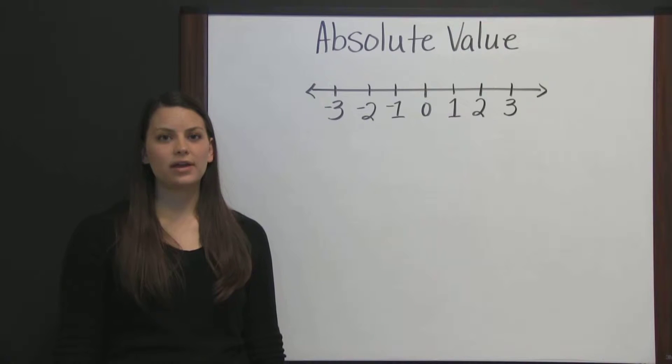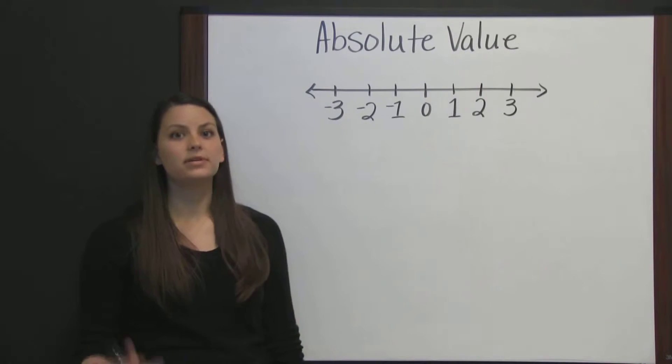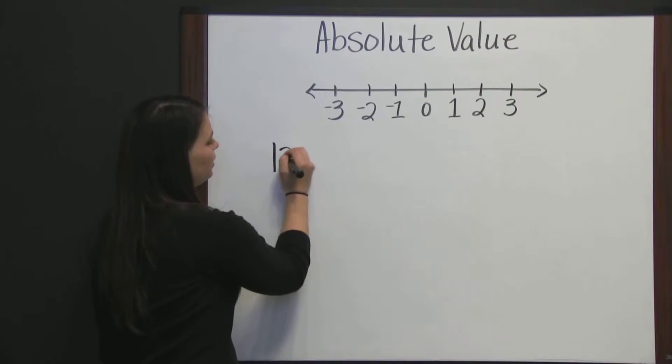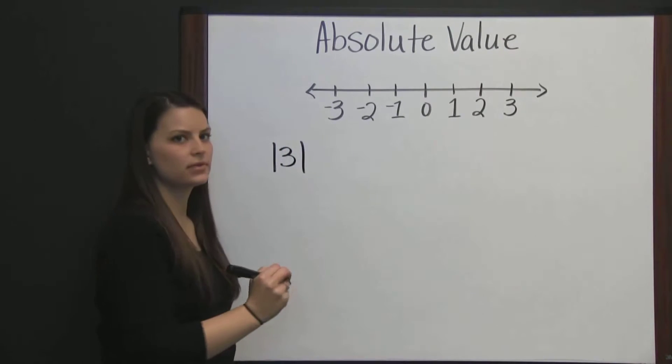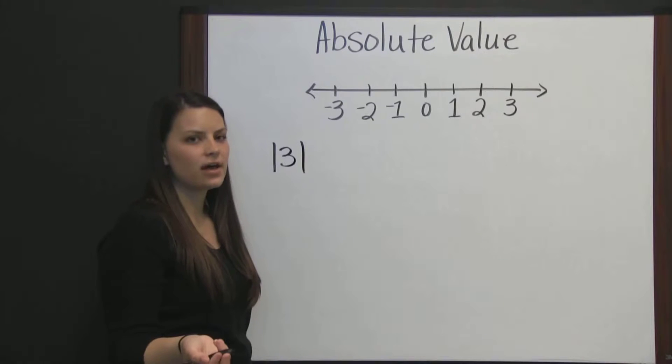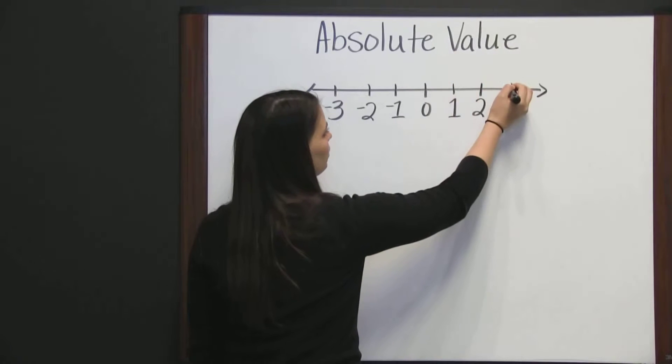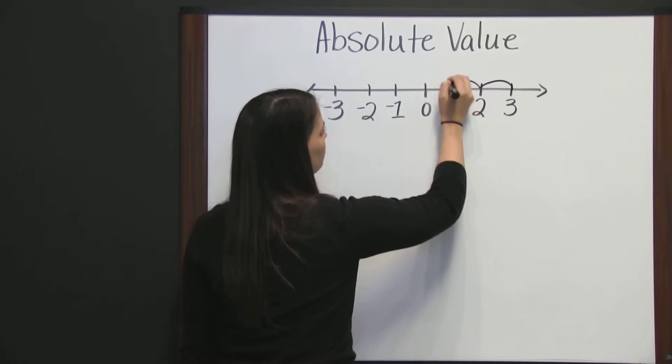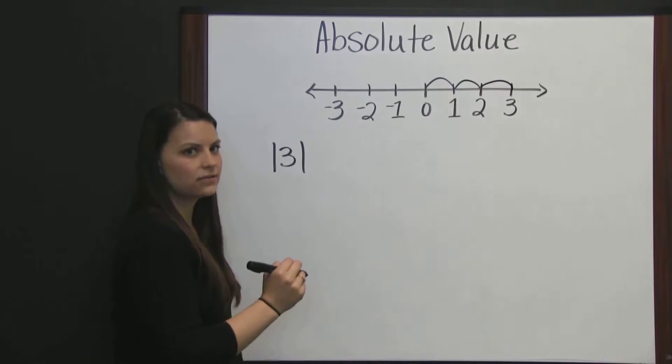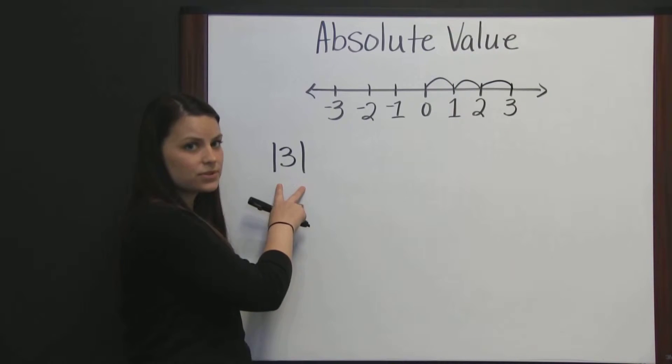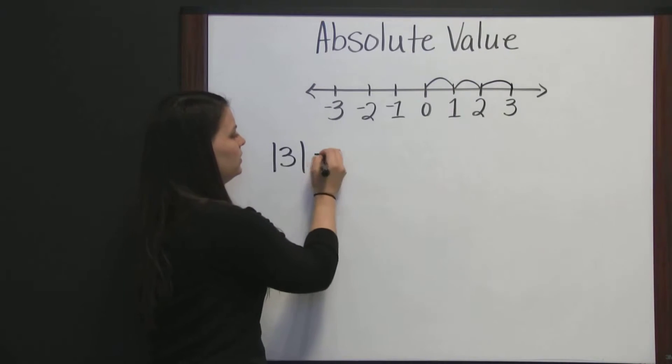It's denoted by a pair of vertical lines surrounding the value, such as the absolute value of three. You can think of absolute value like you're being asked a question: how far is three from zero? Three is one, two, three places from zero. So, the absolute value of three is three.